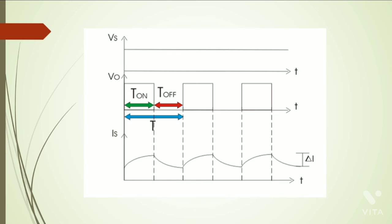These are the waveforms of supply voltage, output voltage, and current waveform. During T_on, the load current increases from I_minimum to I_maximum. And during T_off, the current is reduced from I_maximum to I_minimum. When it reaches I_minimum, again switch on or turn on the chopper.